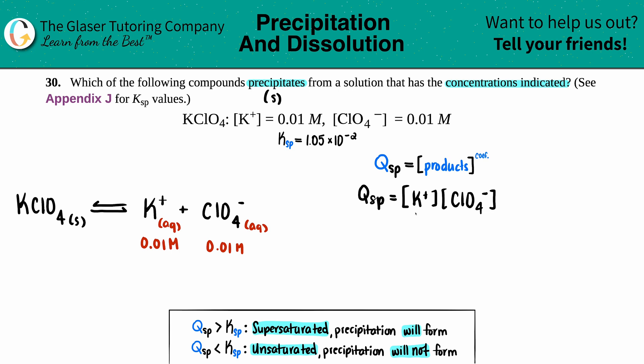Okay. Well, they told us the K plus was 0.01 and the ClO4 was 0.01. So Qsp equals those two values, right? Plug them in. No need to raise it to anything because they're both one in the balanced equation. So let's just see what we get. So 0.01 times 0.01, I get 1.0 times 10 to the negative fourth.